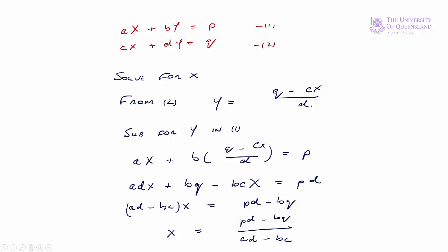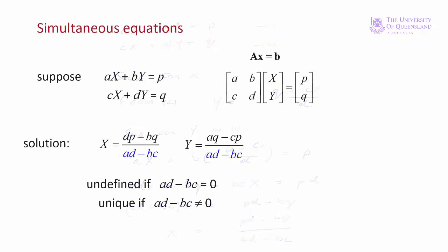Similarly we can solve for y. Going back to our equations, we notice that the solutions for both x and y have ad minus bc as the denominator. Clearly the solution is undefined if ad minus bc equals zero — let's see what that means.